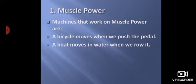So next we have examples of muscle power. Now what are muscle power machines? A bicycle moves when we push the pedal. A boat moves in water when we row it. Bicycle kab chalti hai jab ham uske pedal ko chalate hai. That is muscle power. Boat chalate hai, boat ki jo handles hoti hai, human being usse move karke hi boat ko chalata hai. That is also muscle power.